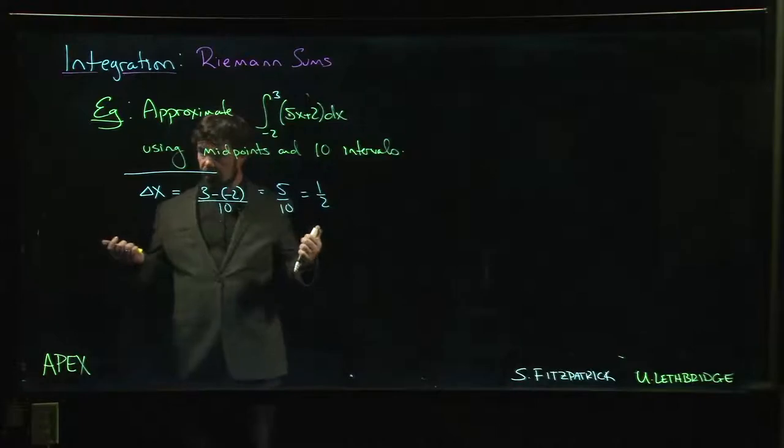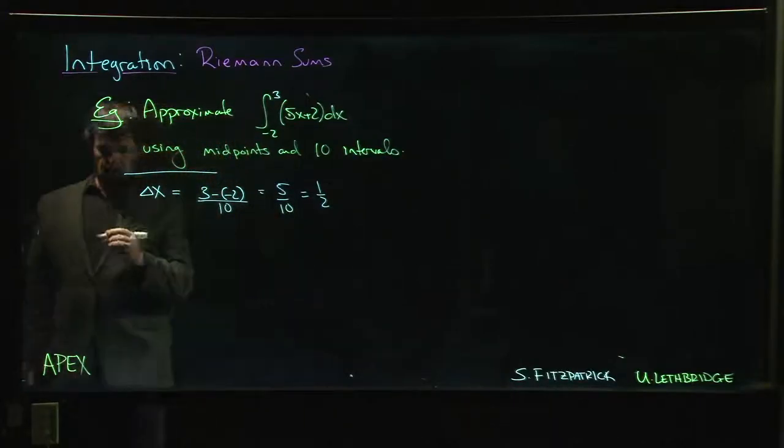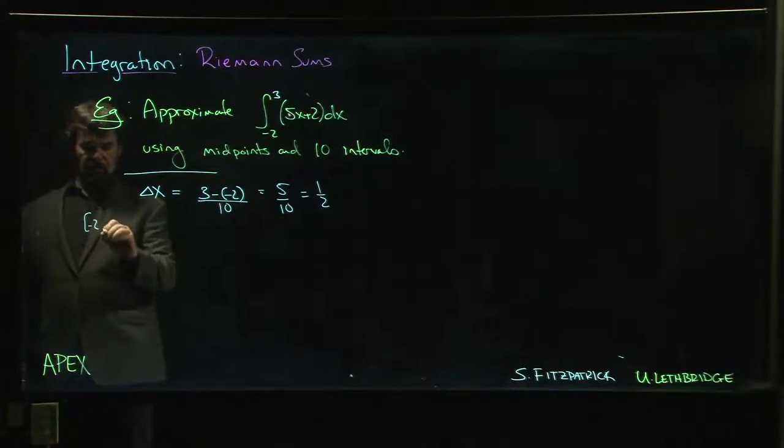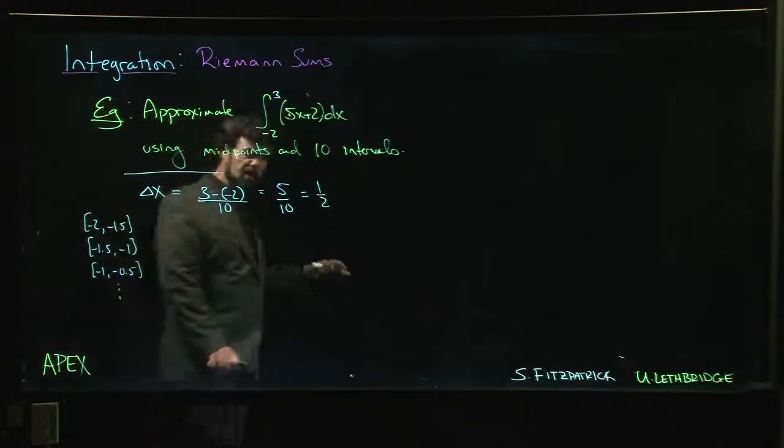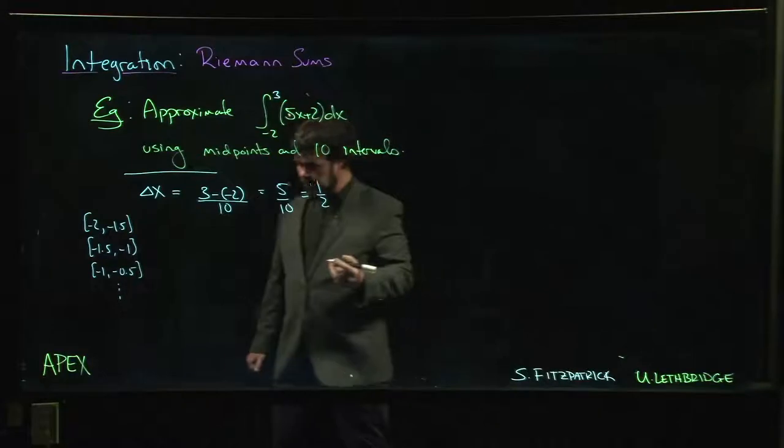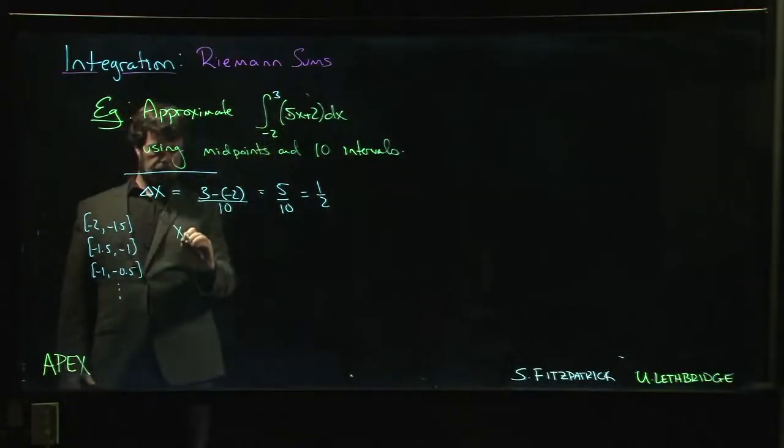So we can write down all the points if we wanted to. So we've got all our intervals. We go from minus 2 to minus 1.5, we go from minus 1.5 to minus 1, minus 1 to minus 0.5, and so on. We don't need to write them all down. What we do want is we want to figure out the i-th term, x_i.